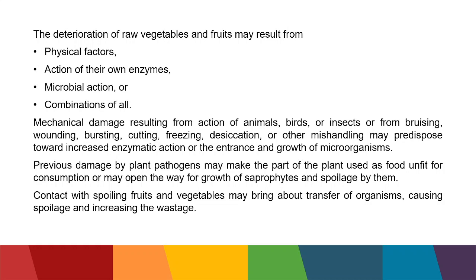Deterioration of raw fruits and vegetables may result from physical factors, the action of their own enzymes — because they all have enzymes, sugars, and the whole metabolic machinery inside them — microbial action, or a combination of all three factors. Mechanical damage can result from the action of animals, birds, insects, or from bruising, wounding, bursting, cutting, freezing, desiccation, or mishandling. Previous damage by plant pathogens may also make food unfit for consumption.